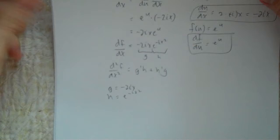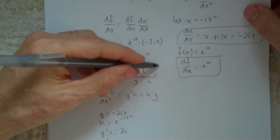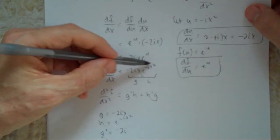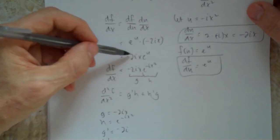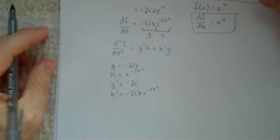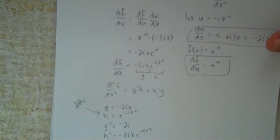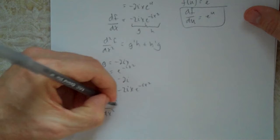g prime equals minus 2i. For h prime - that's the derivative of e^(-ix²) with respect to x, which we just calculated above. So h prime = minus 2ix times e to the minus ix².